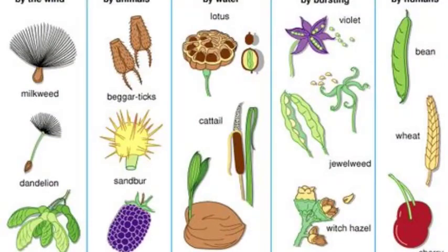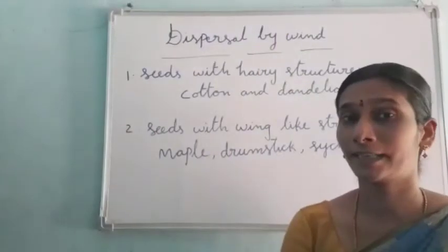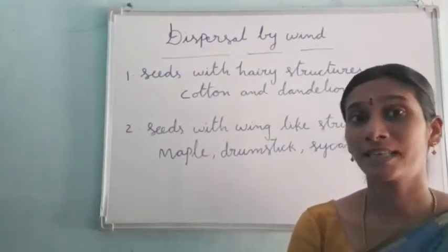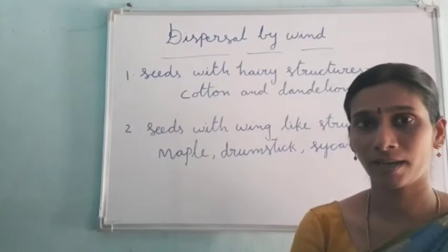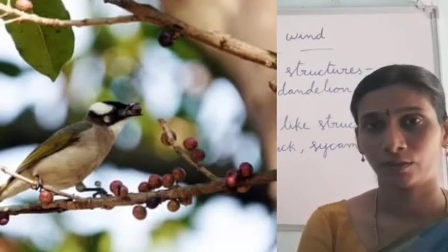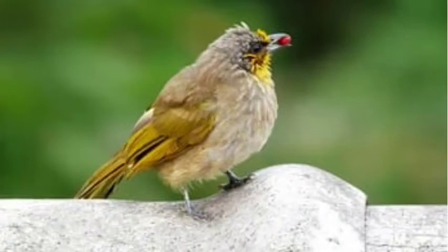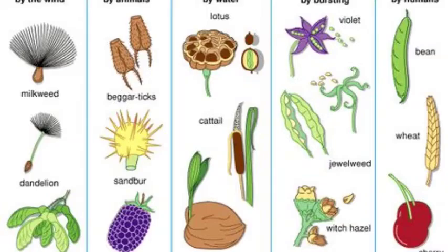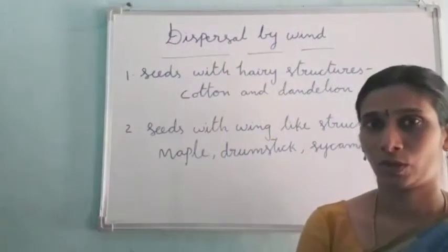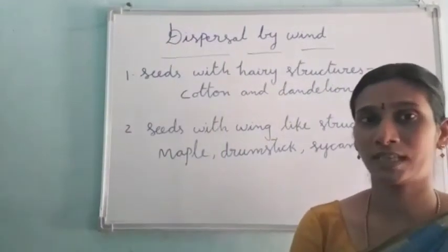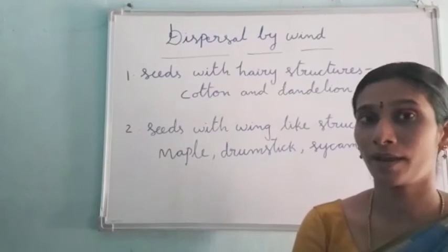So what is meant by dispersal of seeds? The process by which seeds are scattered into distant places by wind, water, animals and human beings is called dispersal of seeds. Today we are going to discuss about dispersal by wind.